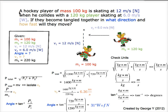A hockey player of mass 100 kilograms is skating at 12 meters per second. He collides with a 120 kilogram player skating at 6 meters per second. If they become tangled together, in what direction and how fast will they move?